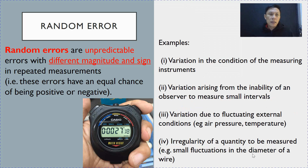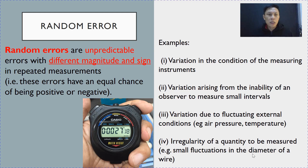Next, in contrast, we look at random error. Random error, as the name suggests, are unpredictable in nature. So when you take repeated measurements, you will yield different magnitude and sign.